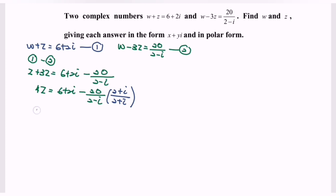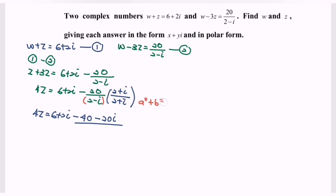Expanding, 4z equals 6 plus 2i minus (40 plus 20i) over the denominator. For the denominator, apply the formula a squared plus b squared since we are multiplying conjugates. With a equals 2 and b equals 1, we get 4 plus 1 equals 5.